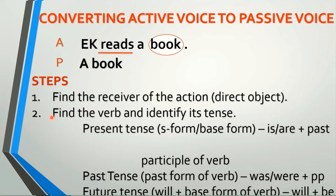Next, find the verb and identify its tense. What's the verb? It's 'reads.' And what is the tense? Present tense. Remember that when a subject is singular in present tense, we use the S form — the verb ends in S. S form is used when the subject is singular, while base form will be used if the subject is plural. For example: EK and EJ read a book — base form, no S, no ES, no ED at the end. That's just the base form of the verb.